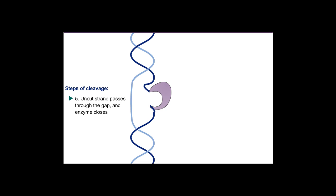The uncut strand then passes through the gap, binding to a pocket in the middle of the enzyme. Binding this strand causes the topoisomerase to change conformation again, closing the gap in the nicked strand.